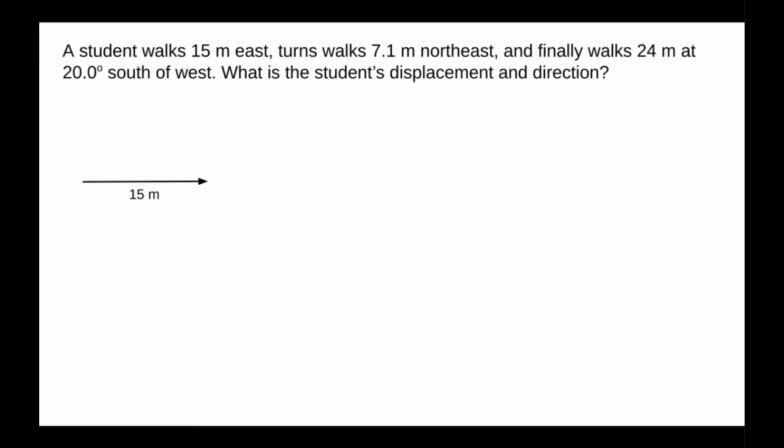A student walks 15 meters east, turns walks 7.1 meters northeast, so that's going to be 45 degrees, and finally walks 24 meters at 20 degrees south of west. What is the student's displacement and direction?